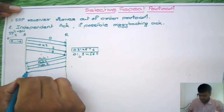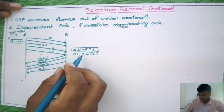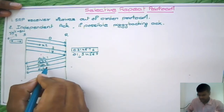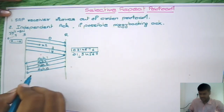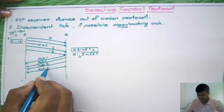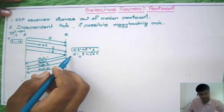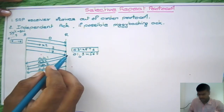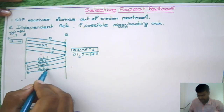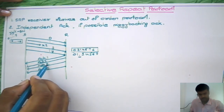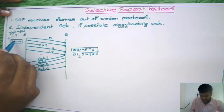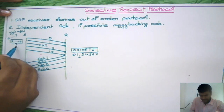Like this, it gives acknowledgement for all packets. For the 7th packet, the acknowledgement is sequence number 0, meaning it received the 7th packet without any loss and is expecting the next packet as sequence number 0. So whenever it identifies that sequence number 2 is missing in the sorted set, it marks that packet 2 is missing.